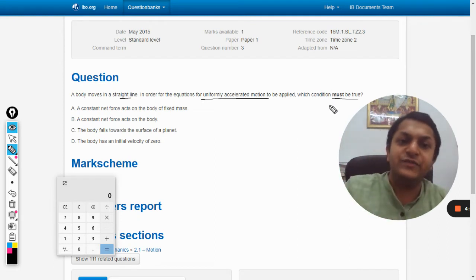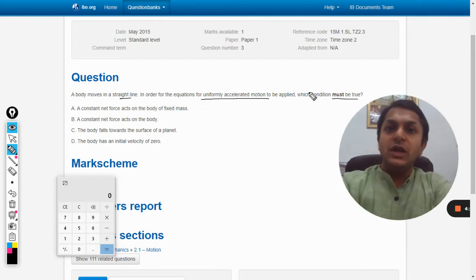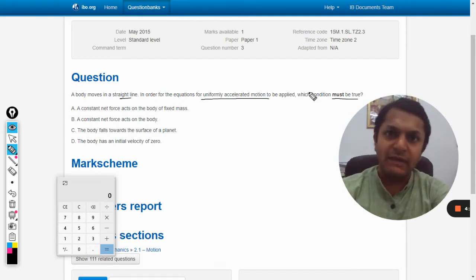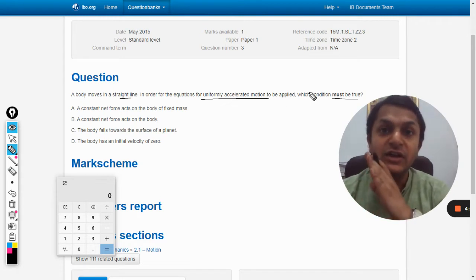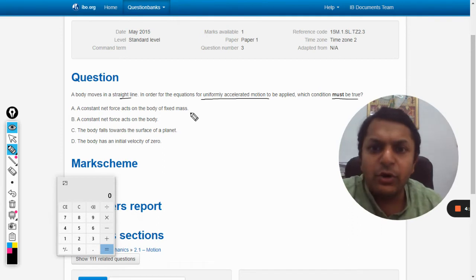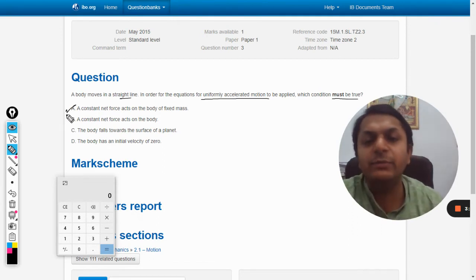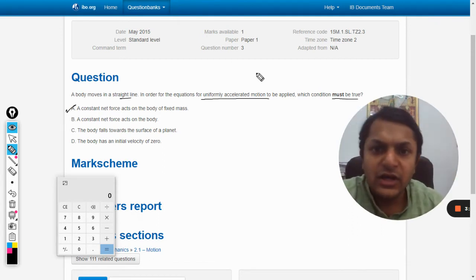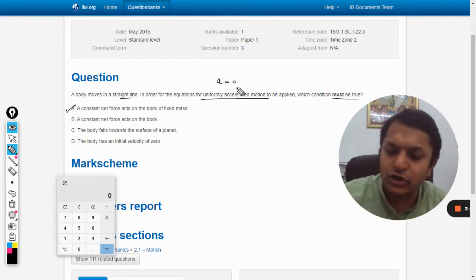Now the question is which condition must be true. All conditions can be true some or the other time, but which condition is the sine qua non condition - the perfect condition that is required? A constant net force acts on a body of fixed mass. This will be the absolutely correct answer because uniformly accelerated motion itself means that the acceleration is constant.